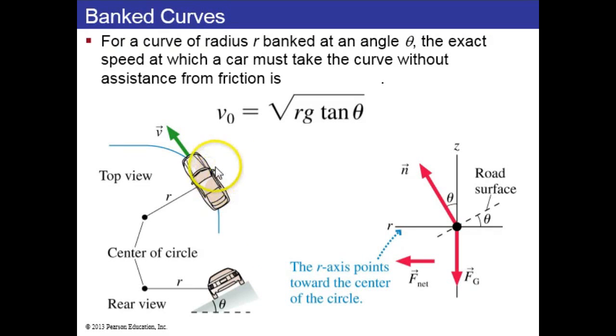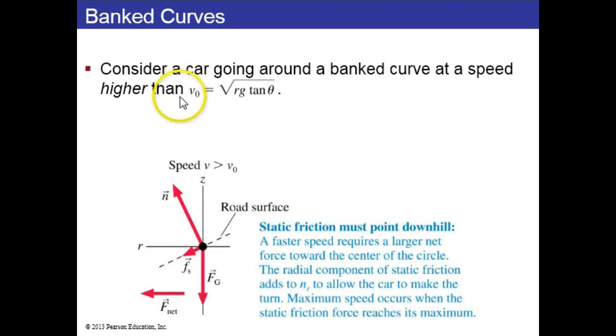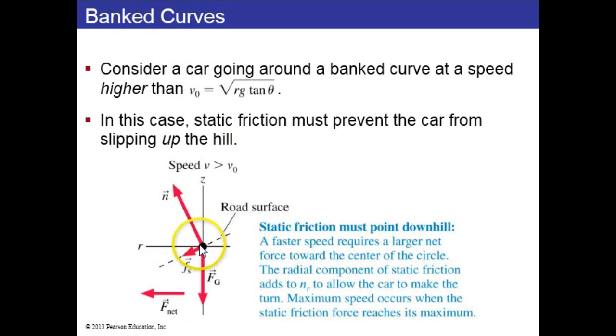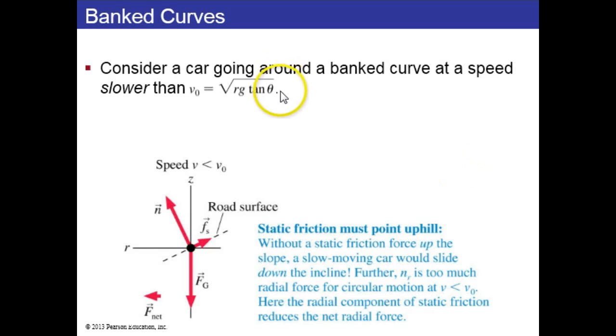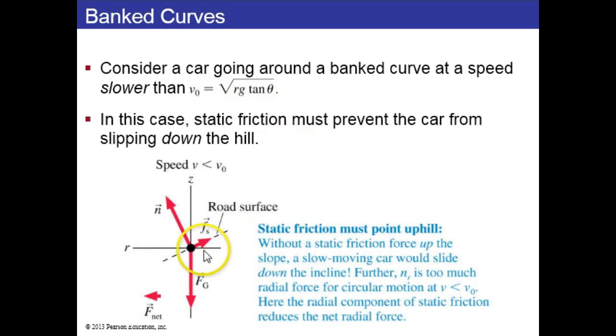We've seen for a curve of radius R banked at an angle theta, the exact speed at which a car must take the curve without assistance from friction is the square root of Rg times tan theta. Consider a car that's going at a speed faster than that. In that case, it would want to slip up the hill, so you need static friction force pointing down the hill to prevent that slipping. The maximum speed occurs when the static friction force goes to its maximum value of mu sub s times n, the normal force. If a car is going slower than square root of Rg tan theta, then it will want to slip down the hill, so the static friction must point up the hill to prevent the car from slipping down.